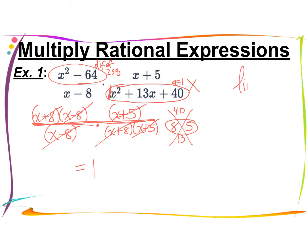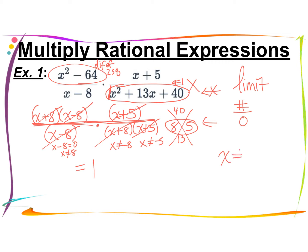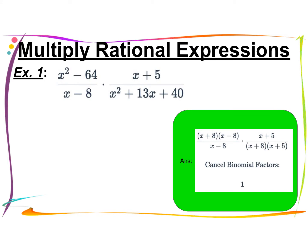Now let's talk about limiting the domain. We don't want to divide by 0, so we don't want our denominator to equal 0. It's easier to see in factored form rather than standard form, and even if you've crossed off a factor, you still have to include it. Set each denominator factor equal to 0: x can't be 8, x can't be negative 8, and x can't be negative 5. So the answer simplifies to 1, but x cannot be 8, negative 8, or negative 5 — those are the restrictions to the domain.